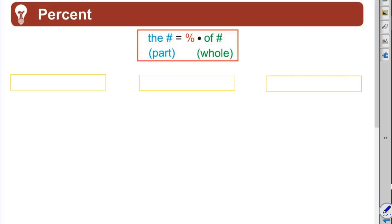So I've got two forms of the formula here. First one: the number equals the percent times the of number. You might say what in the world is the of number? Well, a lot of times in percent problems it's going to say of some number, and so that's real clear.